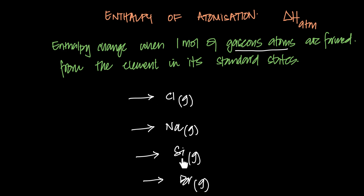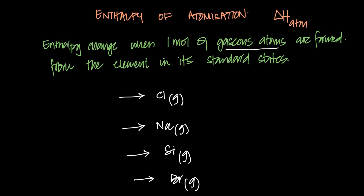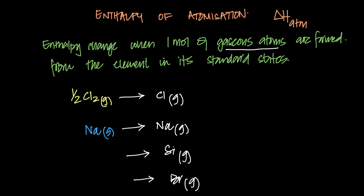The enthalpy change is to make one mole of gaseous atoms from the elements in the standard state. For chlorine, the standard state is Cl₂ gas, and to make one Cl atom you need half a mole of Cl₂. To make a sodium gaseous atom you need one mole of sodium from its standard state, which is a solid metal.